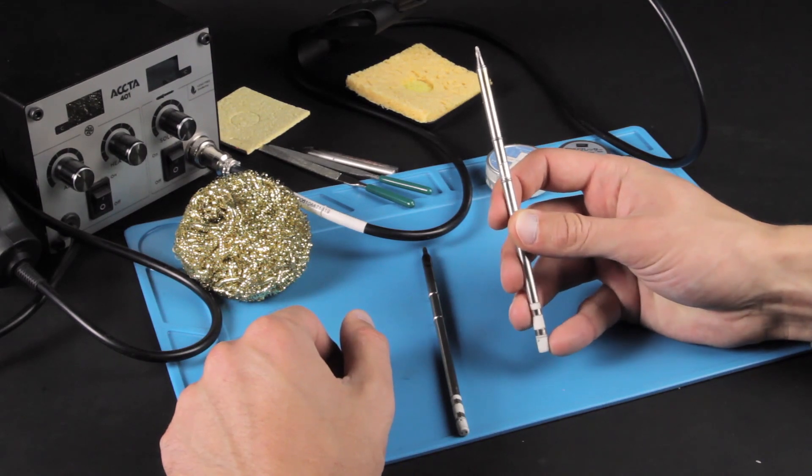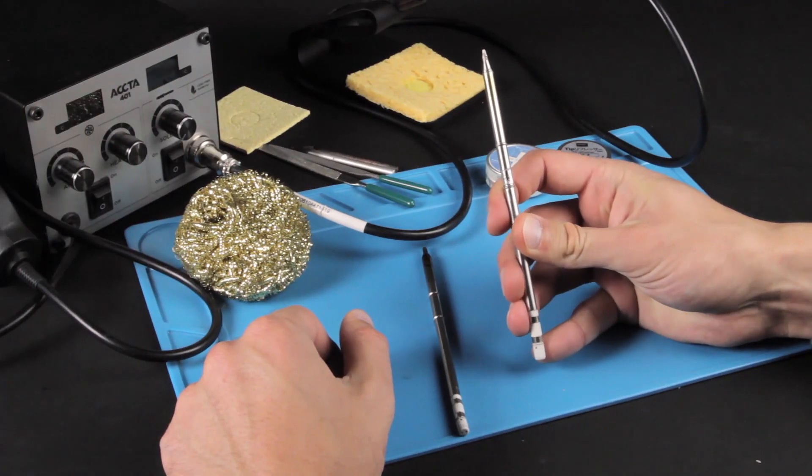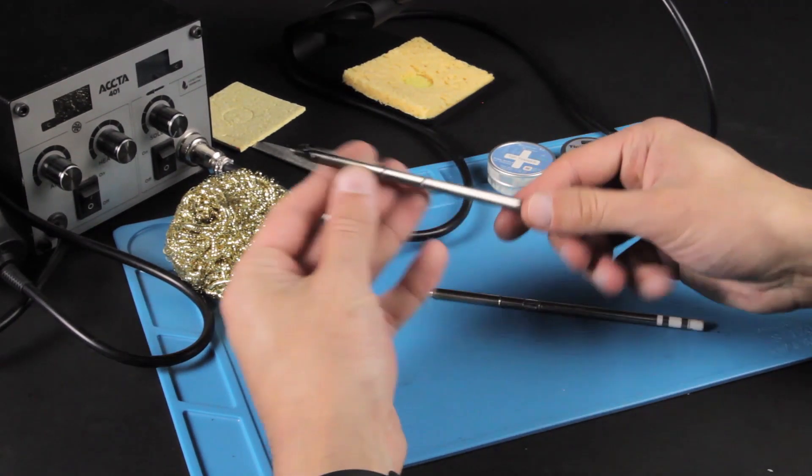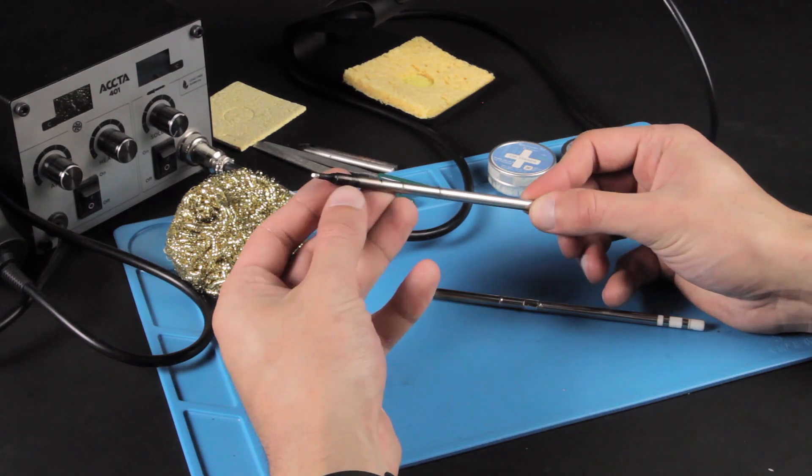But after some time in use it starts looking like this, with blackening and oxides. You may ignore how it looks, but when it becomes so dirty the solder doesn't stick to it anymore, that's a problem.